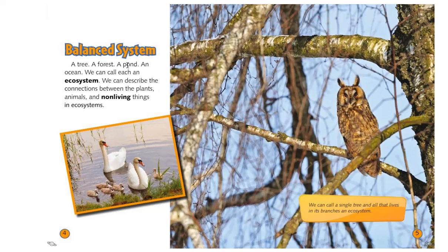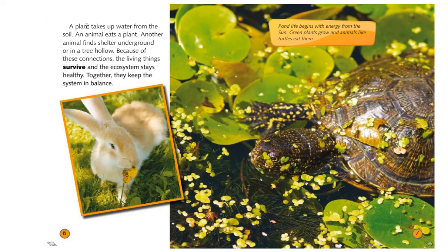A tree, a forest, a pond, an ocean — we call each an ecosystem. We can describe the connection between the plants, animals, and non-living things in ecosystems. We can call a single tree and all that lives in its branches an ecosystem — the tree itself, the owl, and any other bugs or bacteria or animals that may live in that tree. A plant takes up water from the soil, an animal eats the plant, another animal finds shelter underground or in a hollow tree. Because of these connections, the living things survive and the ecosystem stays healthy. Together, they keep the system in balance.